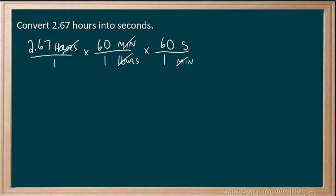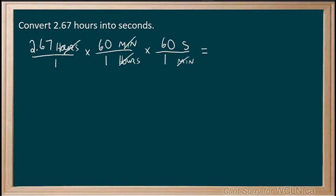Now all I have to do is multiply the numbers on the top, multiply the numbers on the bottom, and divide. So on top we have 2.67 times 60 times 60. On the bottom we have 1 times 1 times 1, so we just end up with our 9612 seconds. We